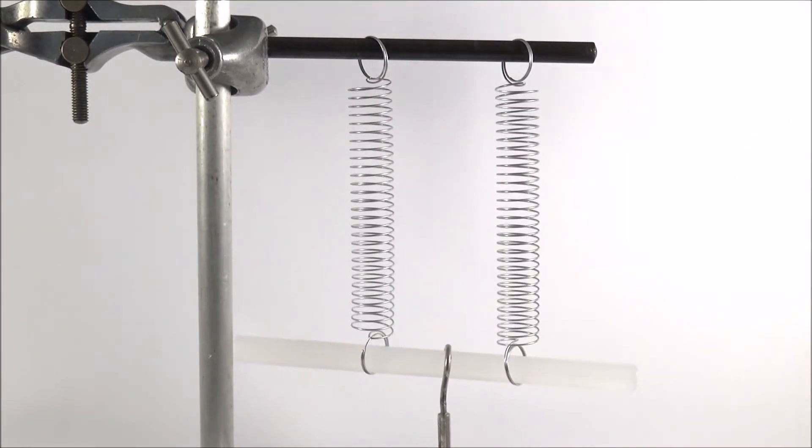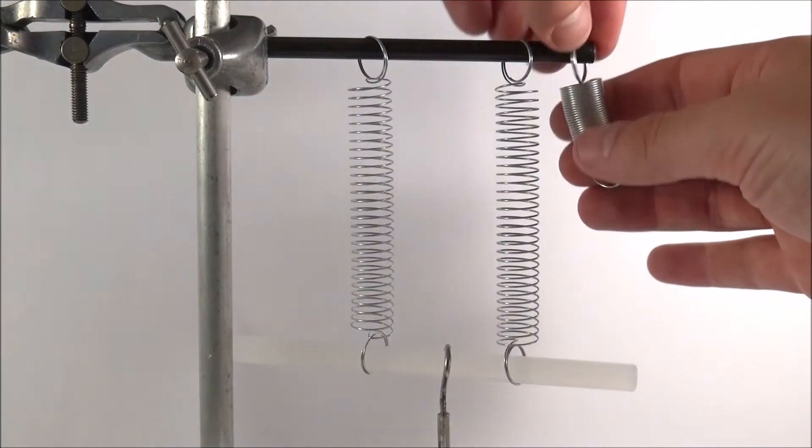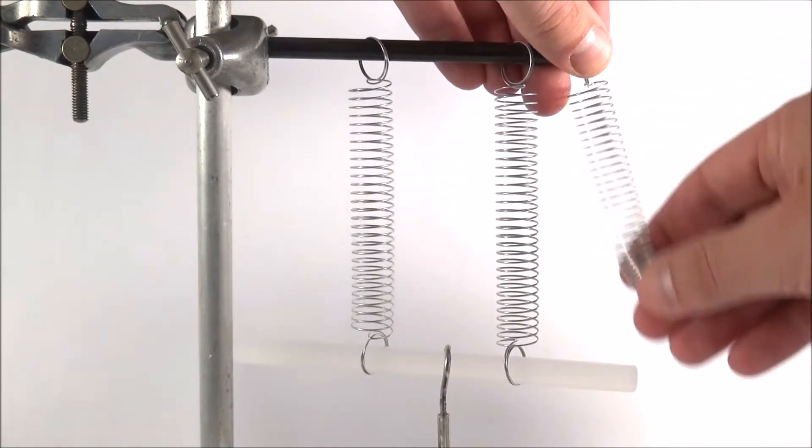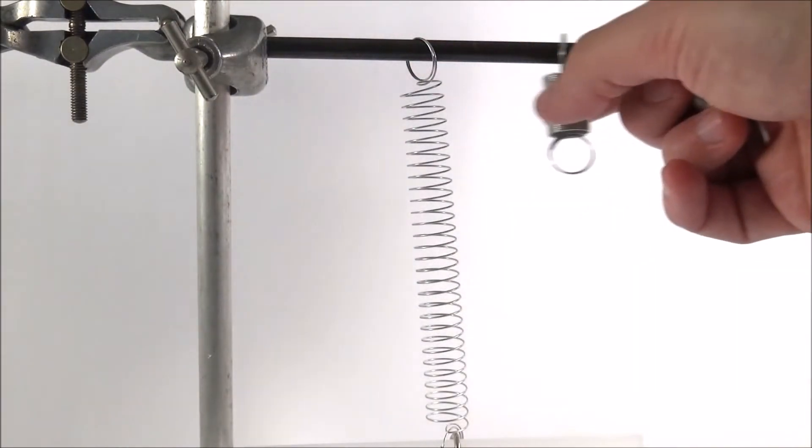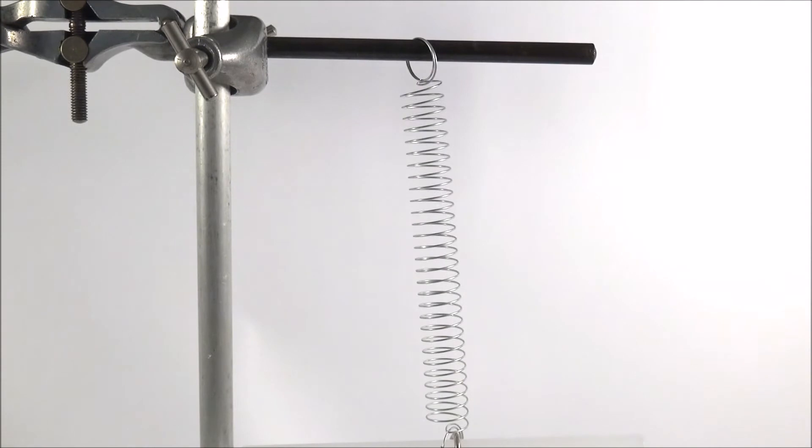Then you can just repeat this for two springs, three, four, five, six springs, all of them in parallel, and again with a bit of trial and error you kind of get these springs on. What you'll find is that with a bit more care you've got different data for the extension depending on how many springs you have in parallel.